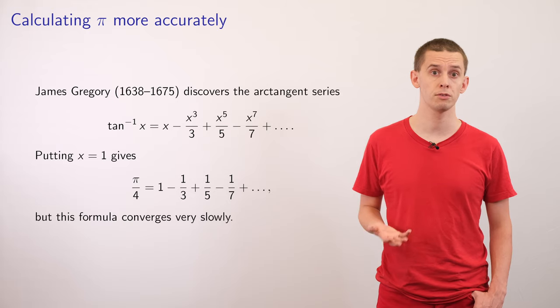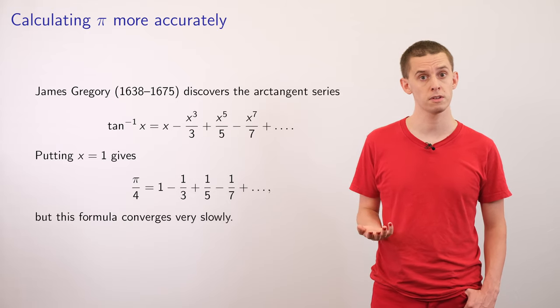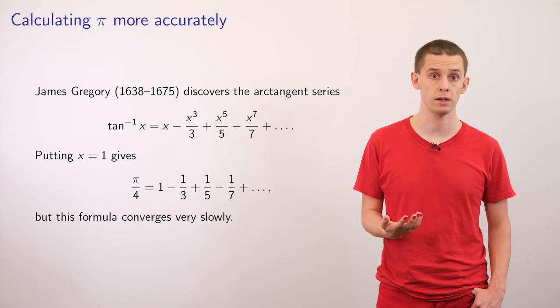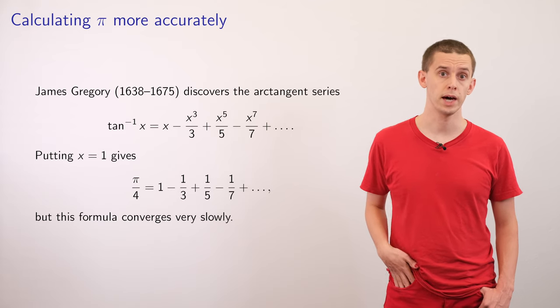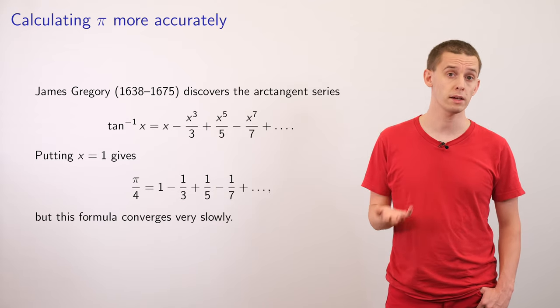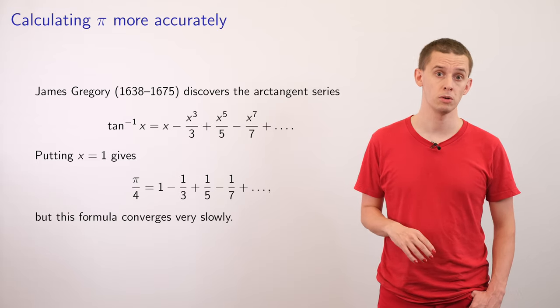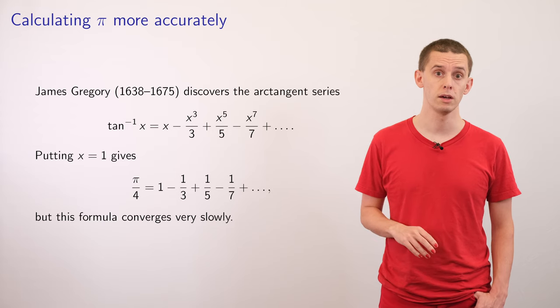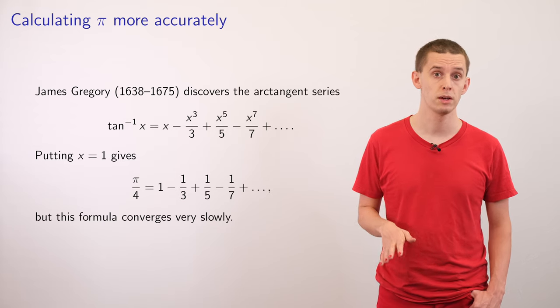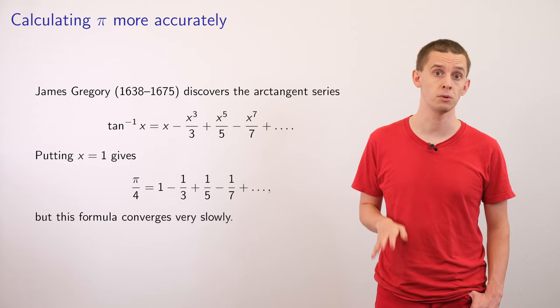And if you put x equal 1 into this formula, then you find that pi over 4 is equal to 1 minus a third plus a fifth minus a seventh plus a ninth and so on. And that is actually one way that you can calculate pi using an infinite series. Unfortunately though, this calculation only converges very slowly.